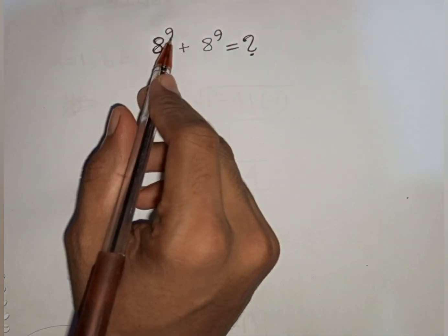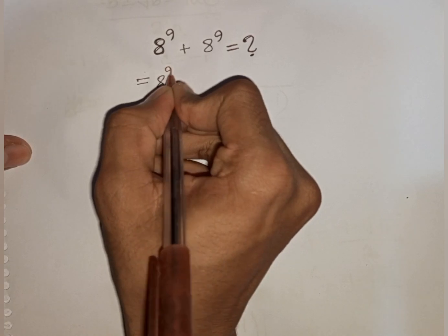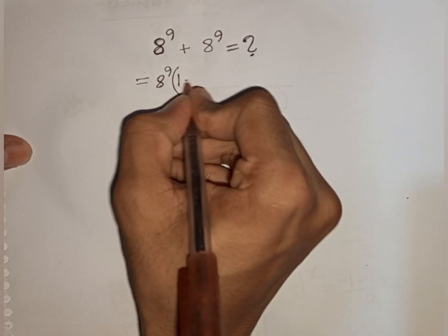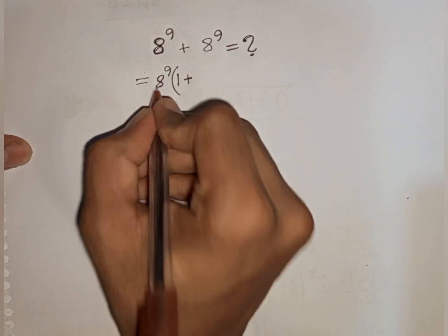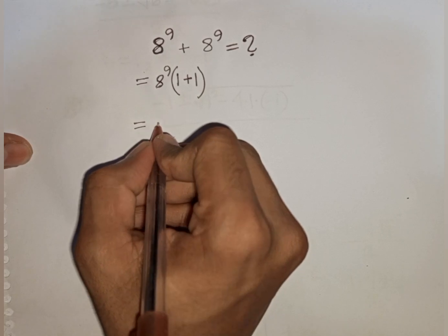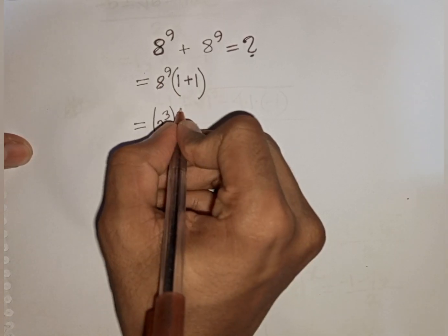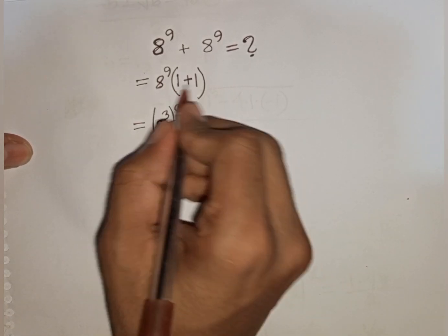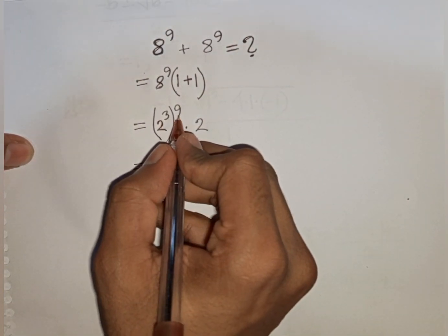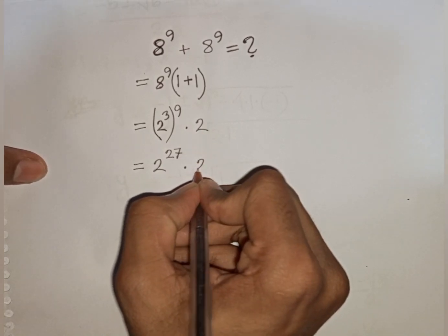How to simplify: 8 power 9 plus 8 power 9 equals what? We take out 8 power 9 as a common factor. So 8 power 9 times (1 plus 1), which equals 8 power 9 times 2. Now 8 power 9 is the same as 2 power 3 bracket power 9, times 2, which equals 2 power 27 times 2 power 1.